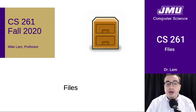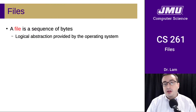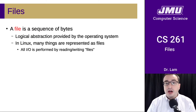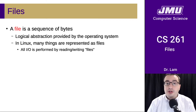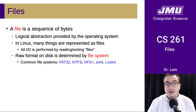Today we're talking about files, which are another abstraction that is provided by the operating system. A file is just a sequence of bytes. In Linux, a lot of different things are represented as files by the operating system. In particular, all input and output is performed by reading and writing files of varying types.